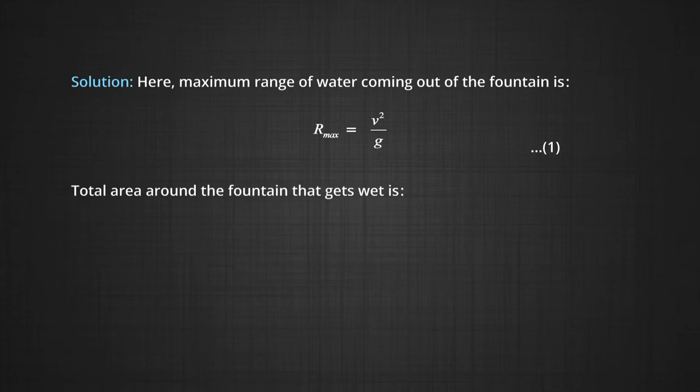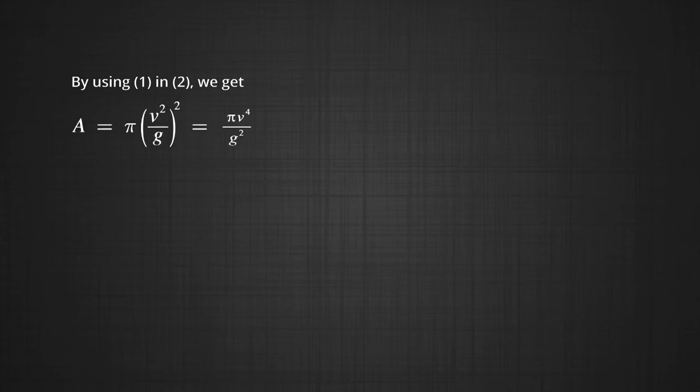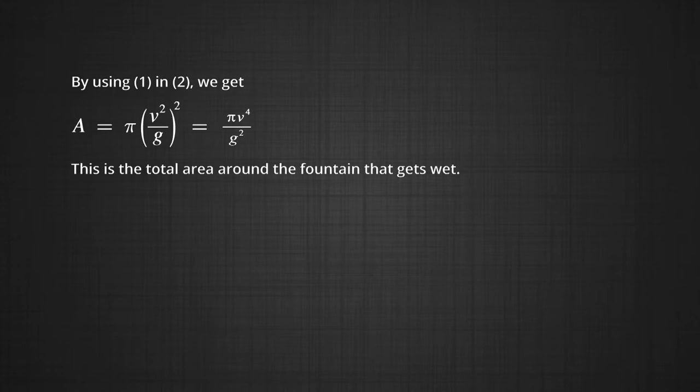The total area A around the fountain that gets wet is πr², where r is the radius of the circular area, taken here as the maximum range. From equations 1 and 2, we get A = π(V²/g)², which becomes A = πV⁴/g². This is the total area around the fountain that gets wet.